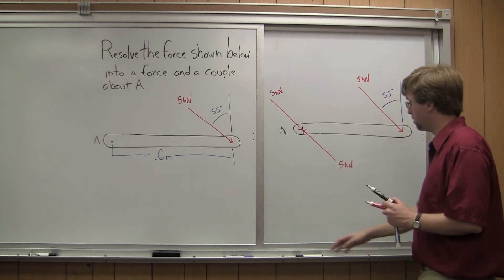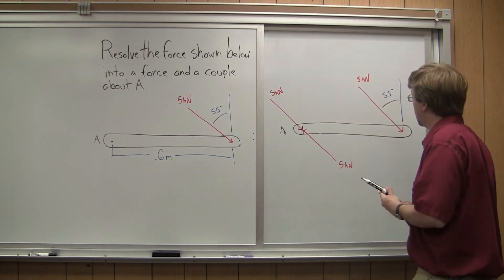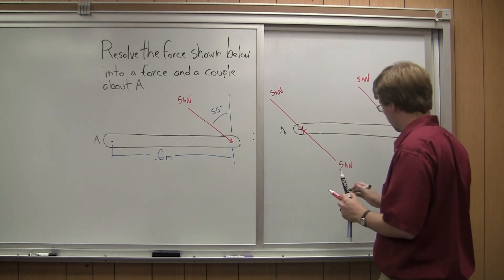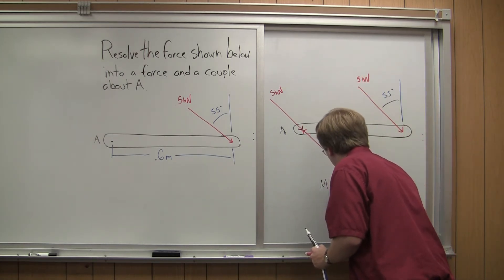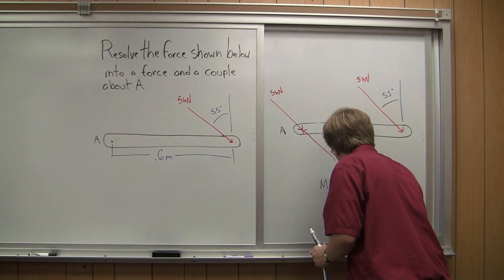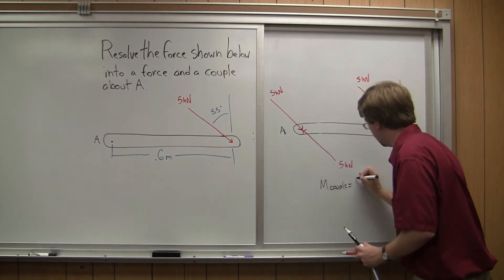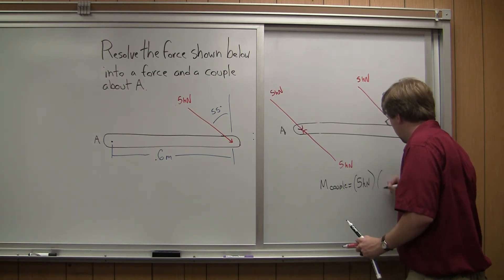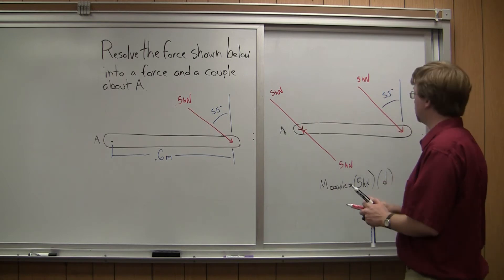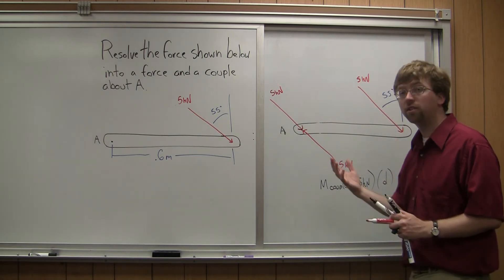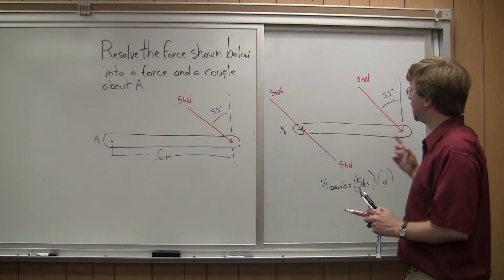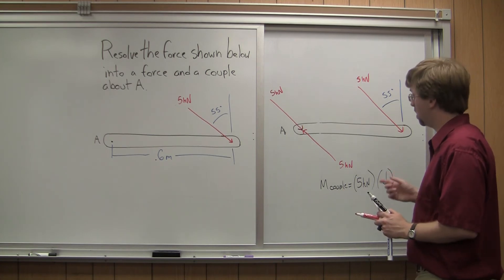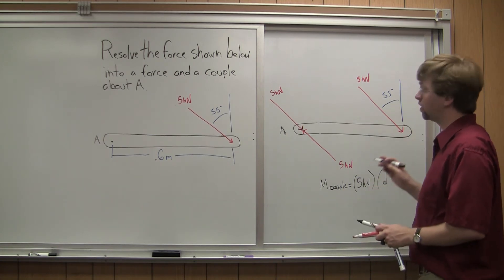And so I need to find the moment of that couple. To do that, it's going to be the force, so 5 kilonewtons, times the perpendicular distance between the two. This is the biggest part of this problem - finding this perpendicular distance. So to do this, we're going to use a right triangle.